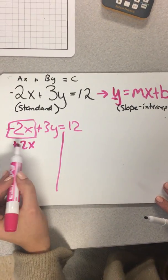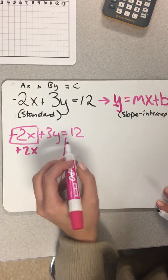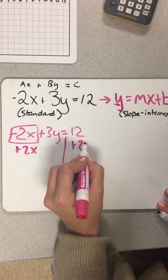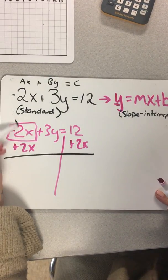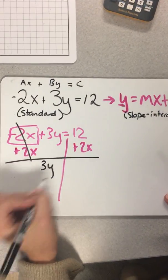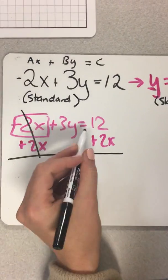But if you remember, what we do to one side of an equation, we have to do to the other side. So I'm going to add 2x on this side. So what we're left with, these can cancel out. We're left with 3y. Our equal sign is still there.